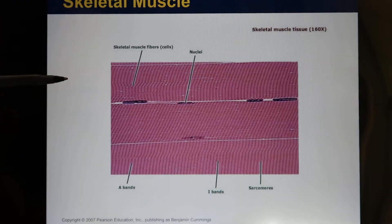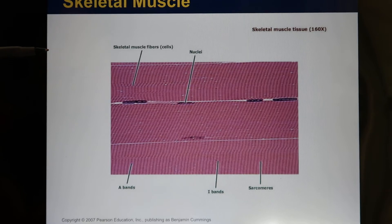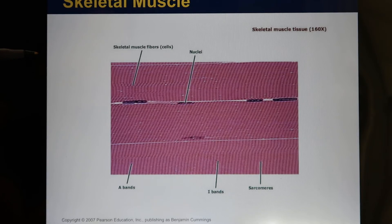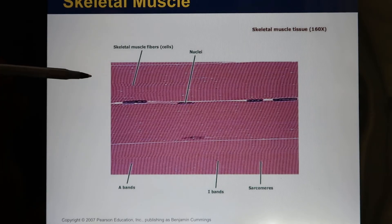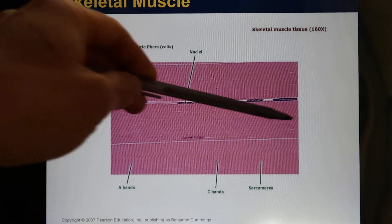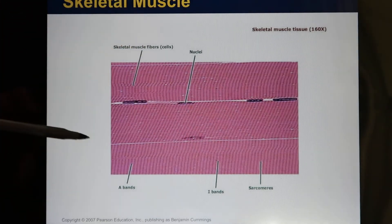Skeletal muscle looks like this under the microscope. Your first lab activity today: you need to be able to identify what kind of muscle it is. Skeletal muscle looks like this — they have almost no branching.